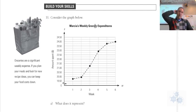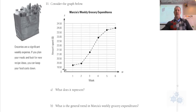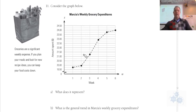So build your skills. You need to do this question with me. Consider the graph below: Marcia's weekly grocery expenditures. What does this represent? It represents the money that she spends every week on groceries, the amount of money spent over a six week period on groceries.